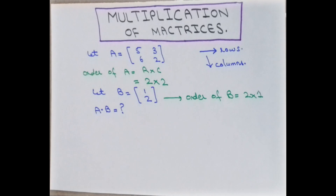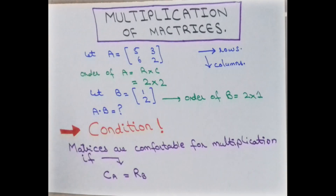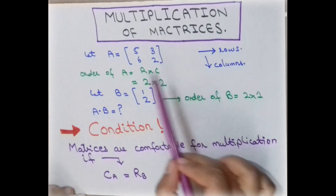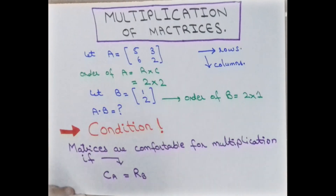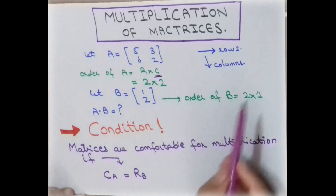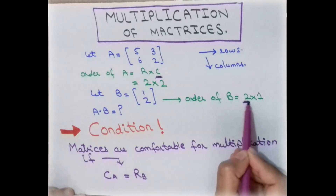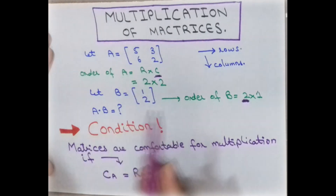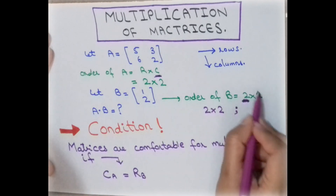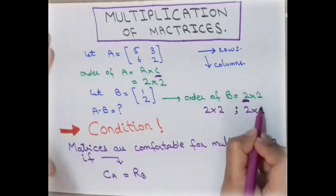The condition for matrix multiplication is: matrices are compatible for multiplication if the number of columns of the first matrix equals the number of rows of the second matrix. To check whether matrix A and matrix B can be multiplied, the order of matrix A is 2 by 2 and the order of matrix B is 2 by 1.